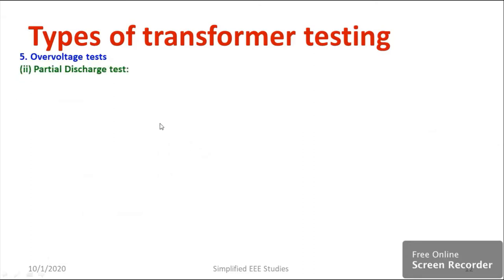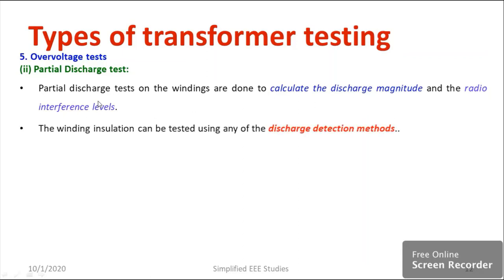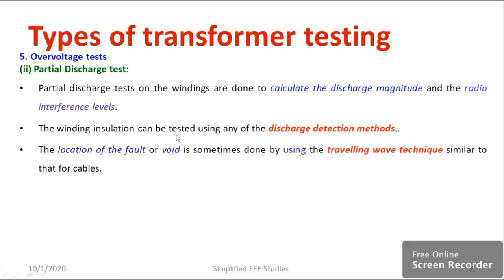I would like to discuss the partial discharge test. The purpose is to calculate the discharge magnitude and the radio interference level. The winding insulation can be tested using any discharge detection method — there is no standard rule. You can go for the straight detector method, balanced detector method, or narrow and wide band frequency method. Location of fault or void is sometimes done using traveling wave methods.